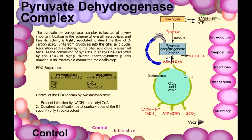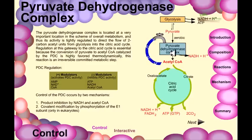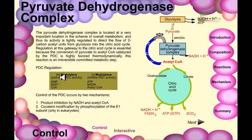Acetyl-CoA cannot be converted back into glucose through gluconeogenesis because there is no enzyme capable of converting acetyl-CoA into pyruvate — that step is extremely energy-consuming and complex, so no such enzyme complex is present. The regulation of PDC involves both positive modulators and negative modulators.